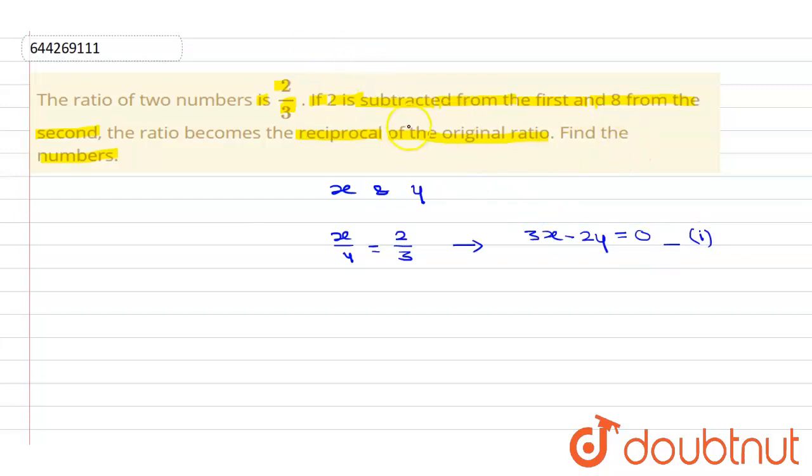Now according to second condition, it is given that if 2 is subtracted from first number and 8 from second number, the ratio will be reciprocal of original number. According to second condition, we can write x minus 2 divided by y minus 8 is equal to reciprocal of original ratio which is 2 by 3. Therefore, this ratio will be equal to 3 by 2. Simplifying this we get 2x minus 4 is equal to 3y minus 24. This is 2x minus 3y is equal to minus 20.